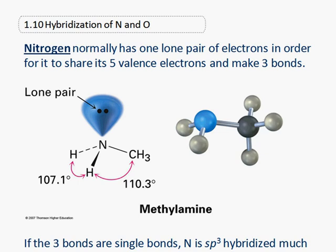So nitrogen, in its bonding pattern, if it's going to be neutral, it normally has one lone pair of electrons so that its five valence electrons will make three bonds.